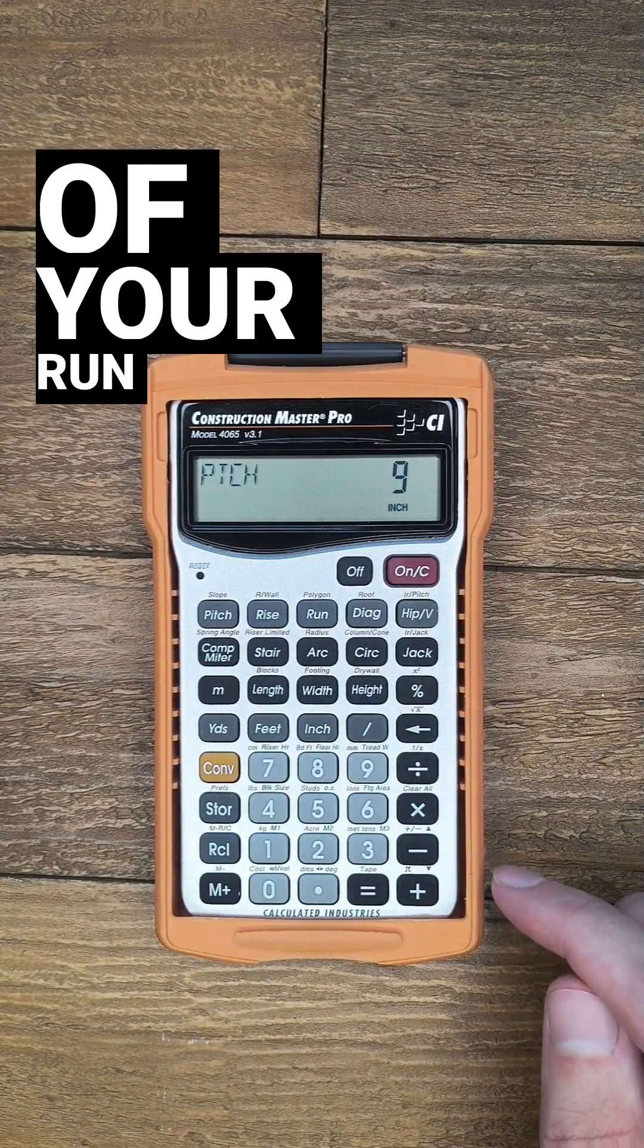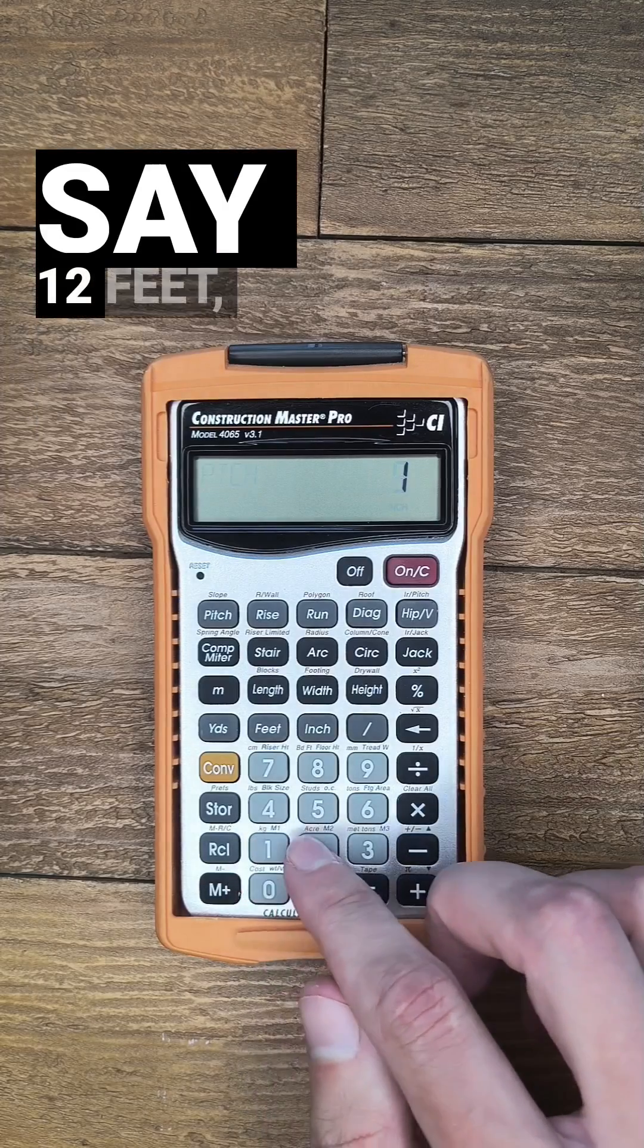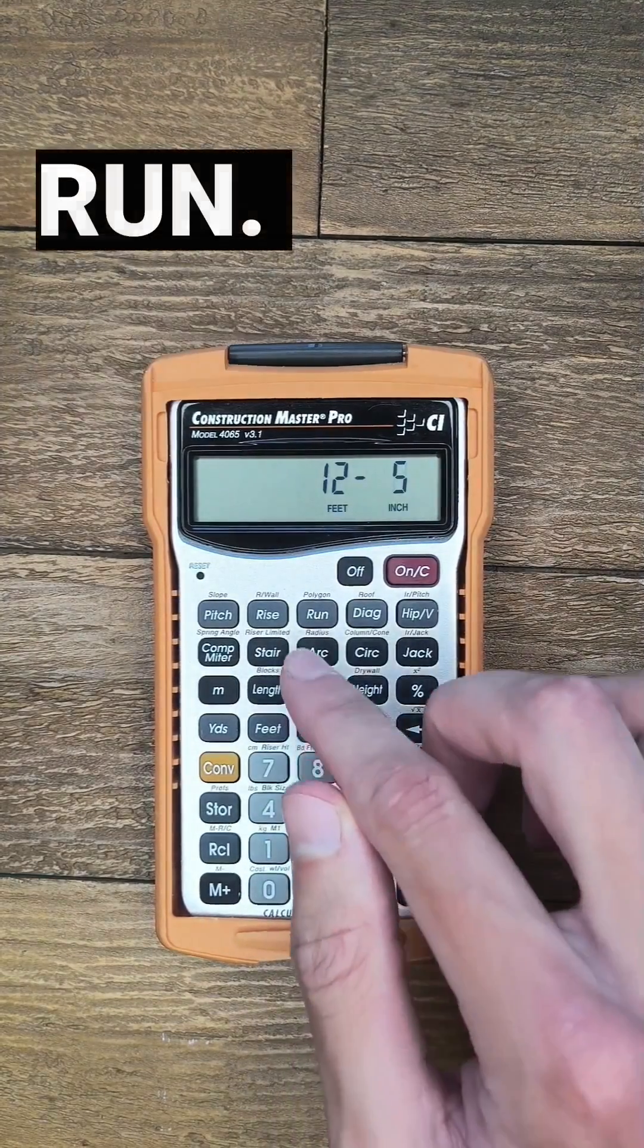Now the length of your run can be entered. Let's say 12 feet 5 inches and push run.